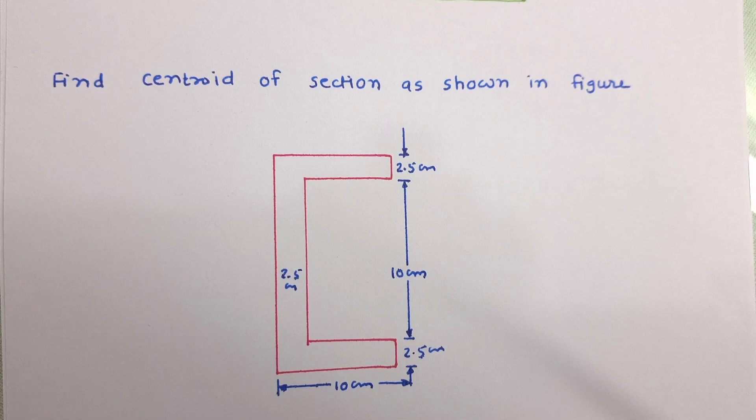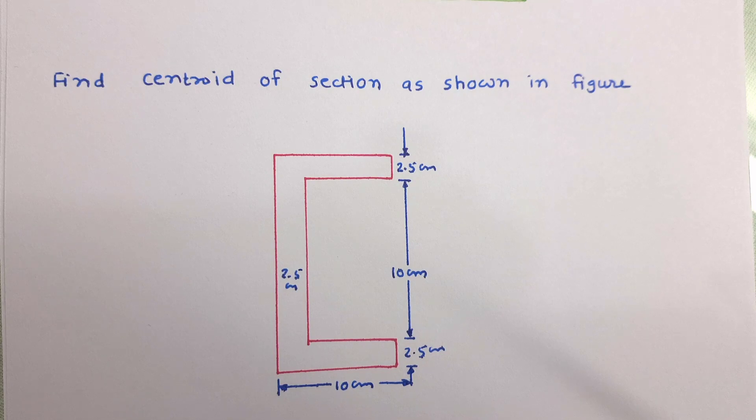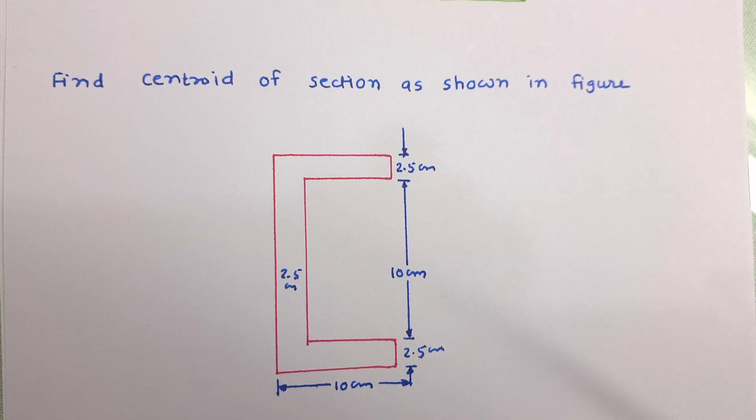So here is the similar type of problem. The dimension of web and flange are given. From the figure we can see it is symmetrical about one axis also. So try to solve this problem. Now if you find any problem, any difficulty, please write in the comment box.